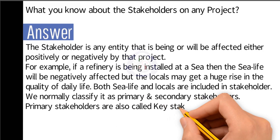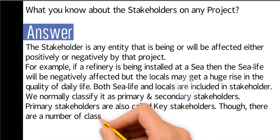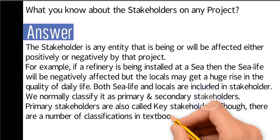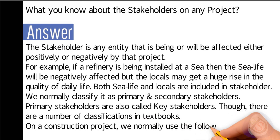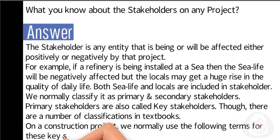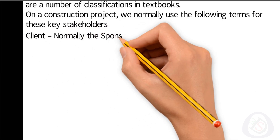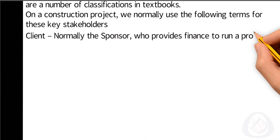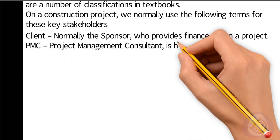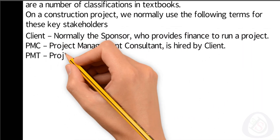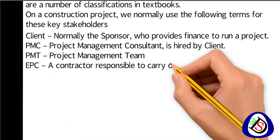Primary stakeholders are also called key stakeholders. Though there are a number of classifications in textbooks, on a construction project we normally use the following terms: client — the sponsor who provides finance to run a project; PMC — project management consultant, hired by the client; PMT — project management team; EPC — a contractor responsible to carry out engineering, procurement, and construction.